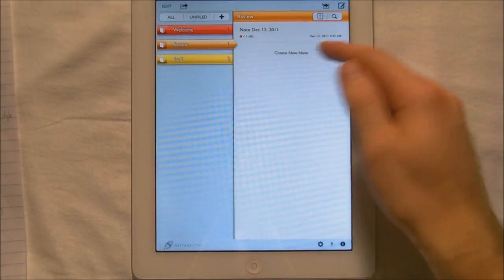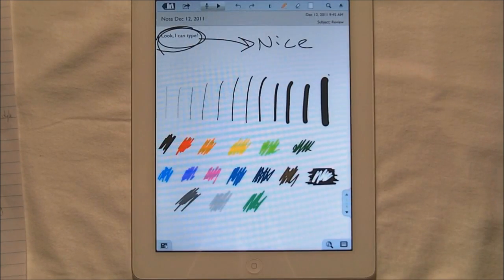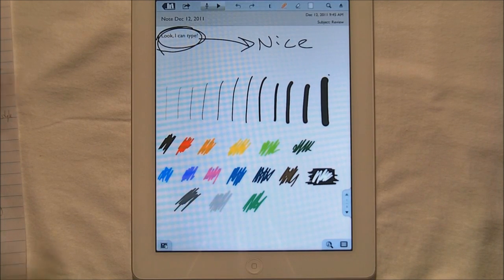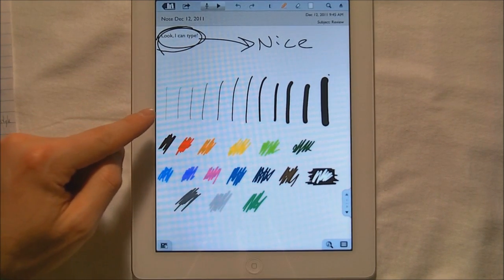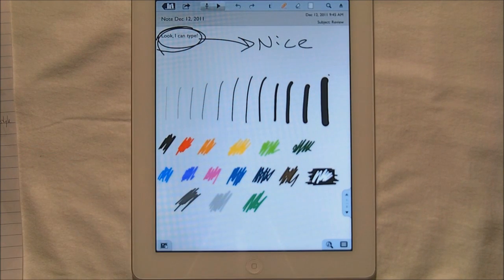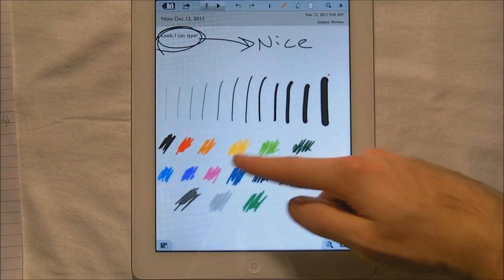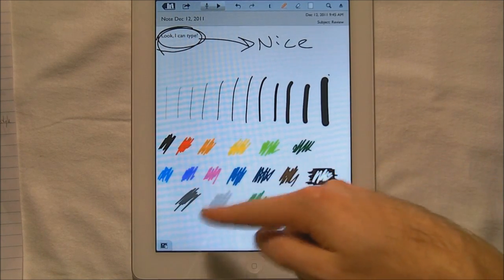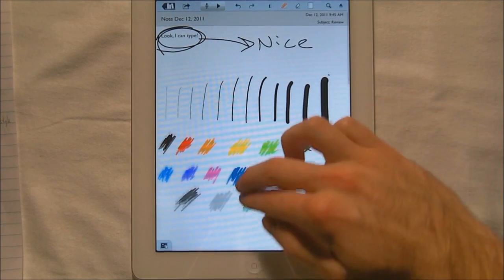What I did is made another review page like I did with Penultimate. And it says, Look, I can type. Nice. And these are all just your different versions of your different widths of your pen or your pencil. And these are your different colors. I just, that's to show the white. These are all your different colors are available. So you do have a lot of different colors.